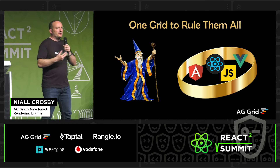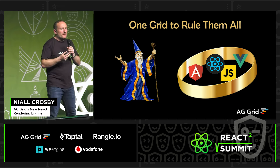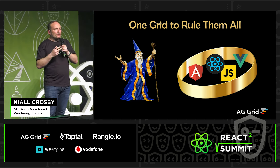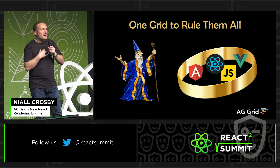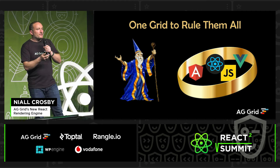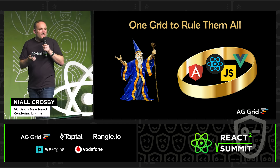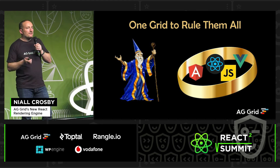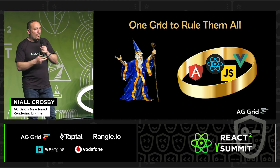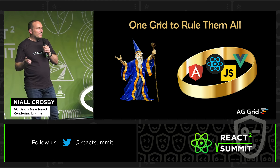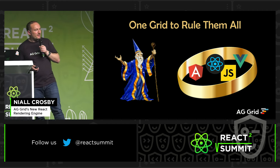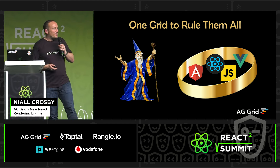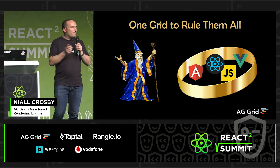Then when we bring AG Grid to a new framework like React, what we can do is rip the rendering engine out that we have and put a React rendering engine in instead. So now when you're using AG Grid in React, it's using React 100% all the way through the grid. That's best explained with a demo, and to help me with the demo I'm going to invite on stage one of our best developers, Mana. Give it up for Mana.